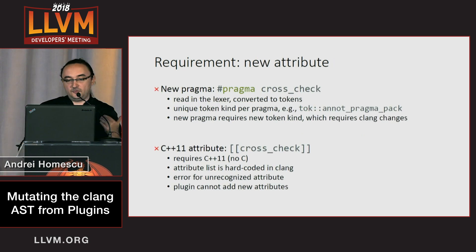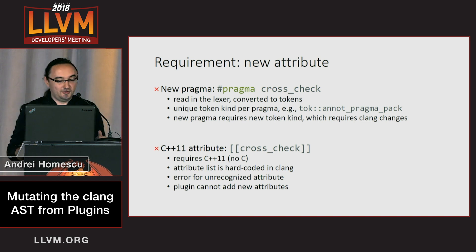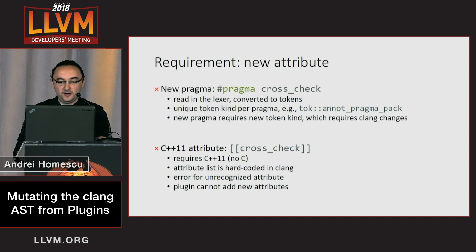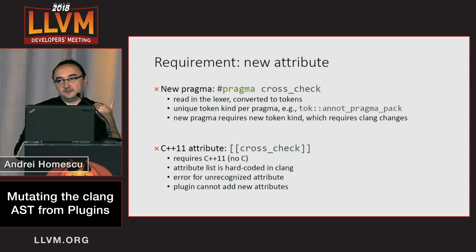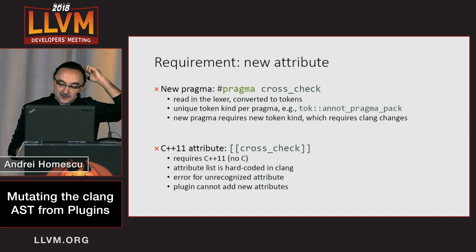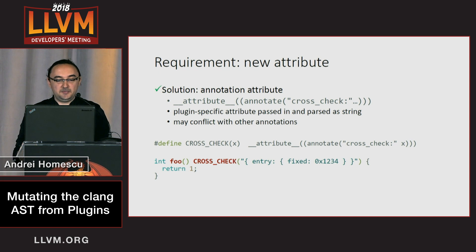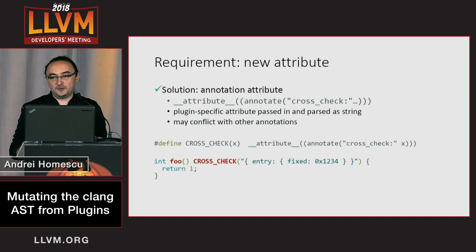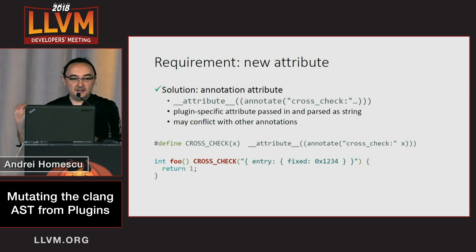A third thing we wanted to do was add attributes to functions and expressions. This turned out to be a challenge. First we tried pragmas — they didn't work for a few reasons, and eventually we would have needed to modify the compiler itself. Then we tried C++11 attributes, which didn't work for basically the same reason. Eventually, what we settled on was attribute annotate. It's a little bit ugly, but it turned out to work really well, ignoring that we have to parse our own configuration settings as strings.